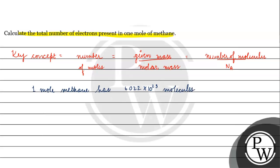Now, if we talk about the number of electrons: carbon has 6 electrons, one hydrogen has 1 electron, and four hydrogens give 4 electrons. Six plus four is ten, so one molecule of methane has 10 electrons.